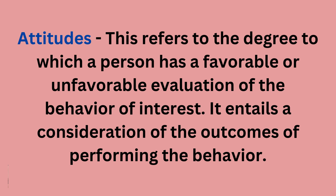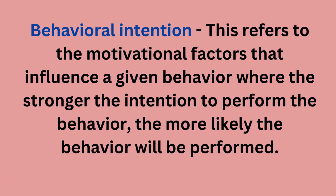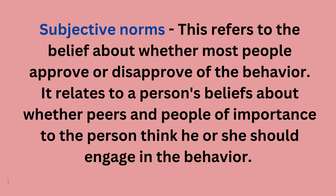TPB is comprised of six constructs that collectively represent a person's actual control over behavior. The first is attitudes — this refers to the degree to which a person has a favorable or unfavorable evaluation of the behavior of interest; it entails a consideration of the outcomes of performing that behavior. The second is behavioral intention — the motivational factor that influences a given behavior. The stronger the intention to perform the behavior, the more likely it will be performed. For example, the stronger your intention to lose weight, the more likely you are to go to the gym consistently.